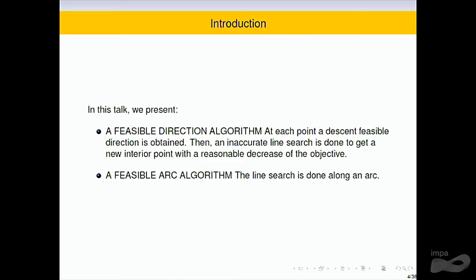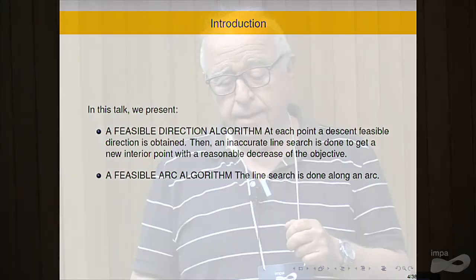First, I shall describe a feasible direction algorithm. This algorithm, at each point, defines a feasible descent direction, and an accurate line search is done in order to find a point with a lower, feasible objective.